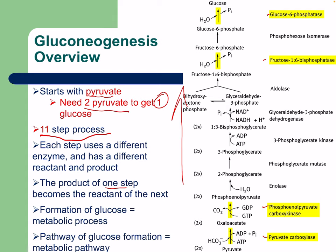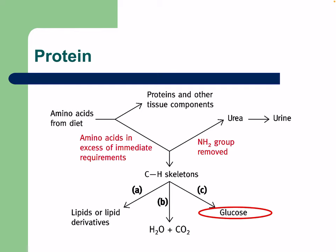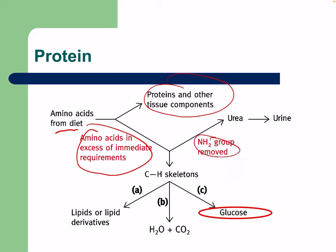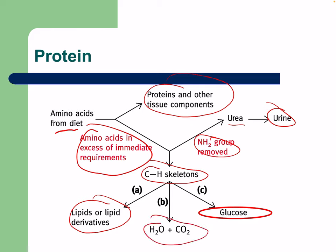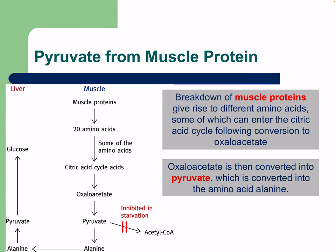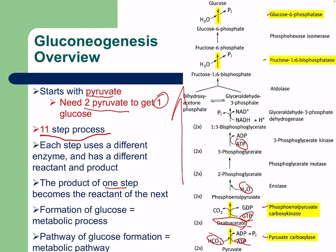Pyruvate is converted back to oxaloacetate using bicarbonate, ATP, GTP, and water — requiring considerable energy. Amino acids from the diet can also become glucose. Excess amino acids will either have their amino groups removed and excreted in urine, or their carbon skeletons can become lipids, CO2, water, or glucose. The carbon skeleton usually goes to pyruvate from muscle protein first, then through the gluconeogenesis pathway.